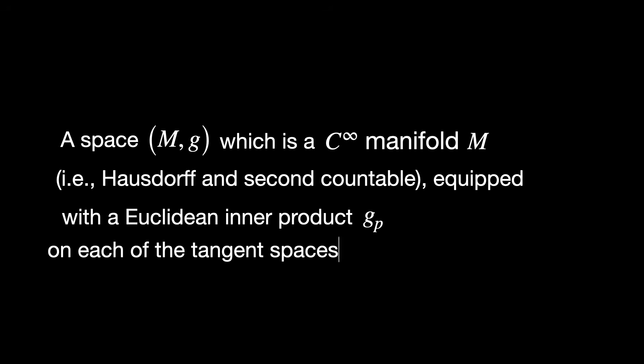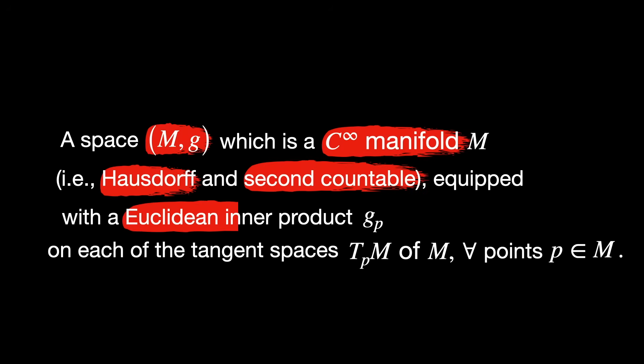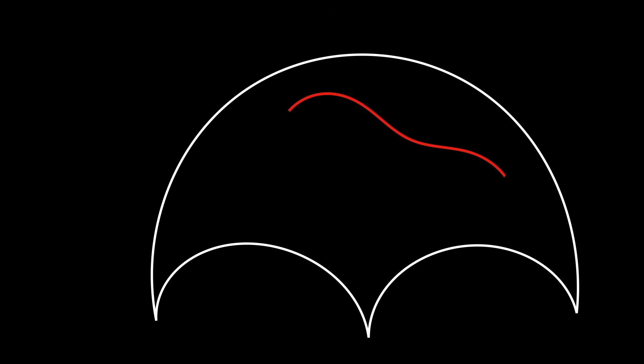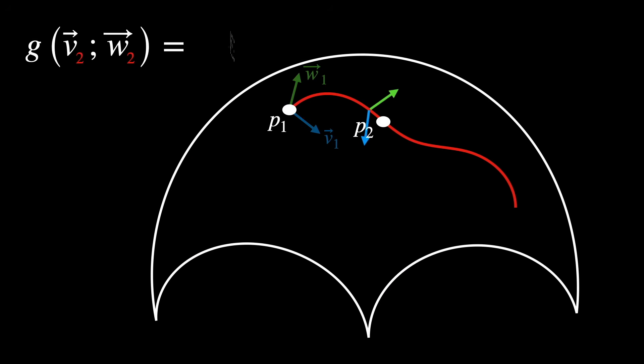This way, we can still enjoy the benefits of the Euclidean inner product — like measuring lengths, angles, and curvature — while applying it to more general curved spaces. There you go: the complete definition of a Riemannian manifold. A space M which is a C-infinity manifold — in other words, it is Hausdorff and second countable — equipped with a Euclidean inner product G_P on each tangent space T_P M of the manifold M, for all points P in the manifold. In addition, the metric has the nice property of varying smoothly from point to point.